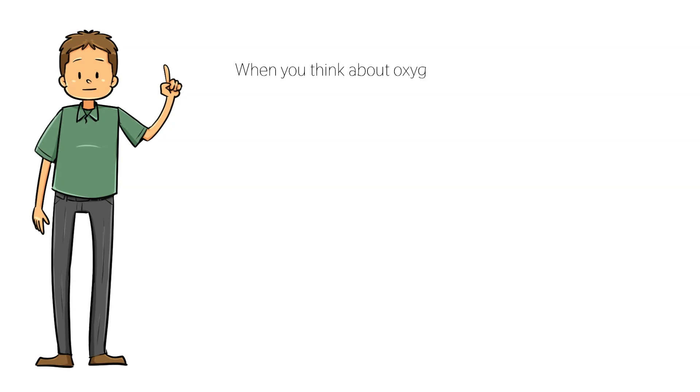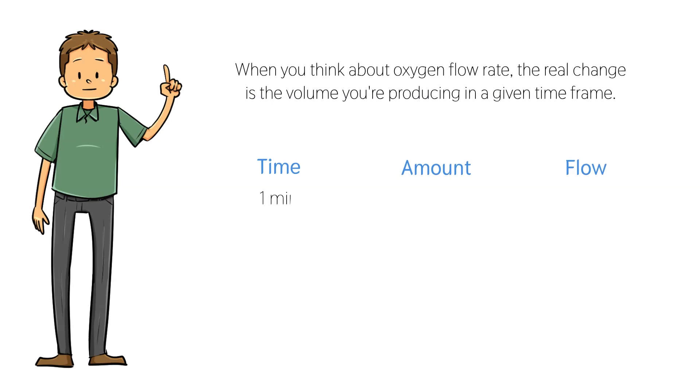When you think about your oxygen flow rate, the real change is the volume you're producing in a given time frame. Running the machine for one minute, you would produce 250 milliliters of 18 gamma ozone gas at the 1/4 liters per minute flow rate, while at 1/8 liters per minute you will produce 125 milliliters of 18 gamma ozone gas. We'll cover ozone flow rates more in depth in a later video.